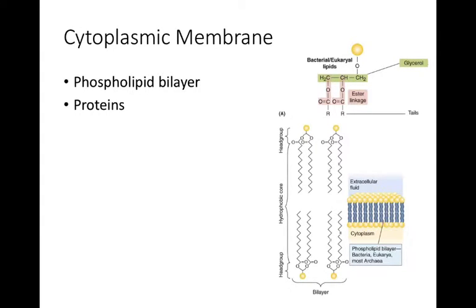Bacteria have a semi-permeable phospholipid bilayer that makes up either the cytoplasmic or cell membrane, and also the outer membrane in the case of gram-negatives. There are two features to these membranes: the first is the phospholipid bilayer, and the second are proteins — either peripheral or integral proteins that are bound or anchored into this phospholipid bilayer.